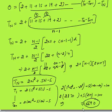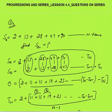That was all about Lesson 4.4, questions on series. The key technique: for difficult series, write the series one term behind to convert it into an AP or GP, find the nth term, then apply summation formulas. Thank you.